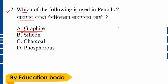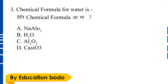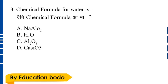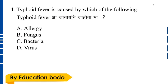Question number three: What is the chemical formula for water? Option B is the right answer — H₂O. The chemical formula for water is H₂O.